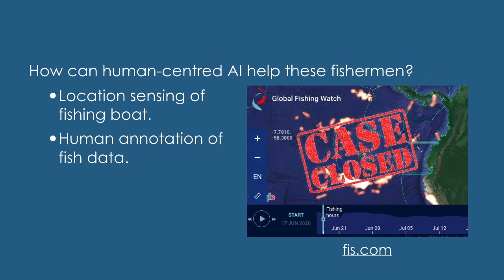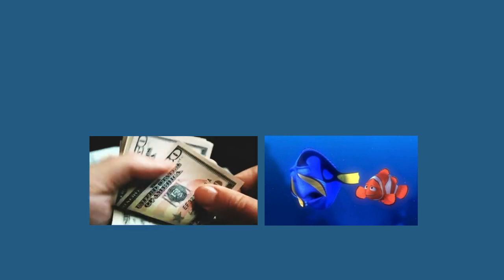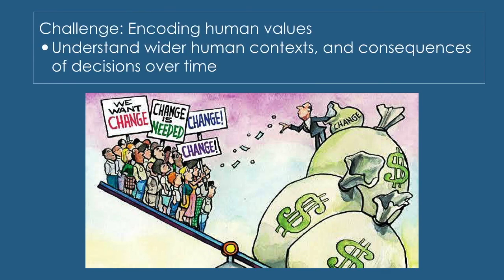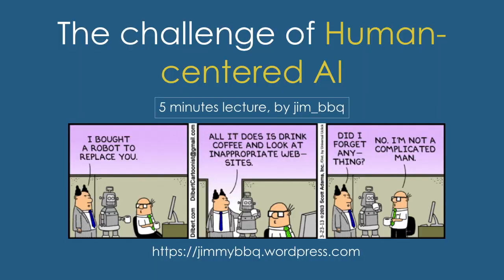So problem solved, right? Wait, there is another challenge. The objective of this AI system is to improve humans' prosperity. Fishermen become more productive and earn more money. But have you considered the fish population? Is our AI system so effective that, in the long run, it causes the fish population to collapse completely? And by the way, who owns this technology? What about fishermen who have no access to it? Are we not concerned at all with social justice and economic inequality? This is perhaps one of the most important challenges in human-centered AI: encoding human values to understand wider human contexts and consequences of our decisions over time. Thank you for listening.